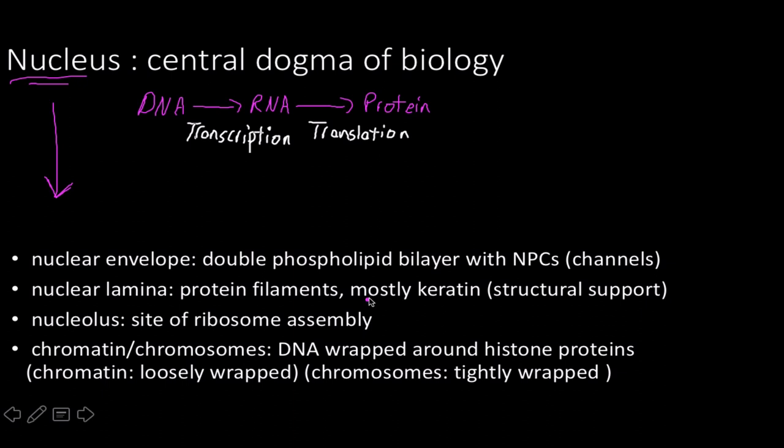If the nuclear lamina is meant to provide structural support, you want a really strong protein — mostly keratin does that job. Long after the cell is dead, you can still see the nuclear lamina in place because it takes a very long time for that structure to degrade.